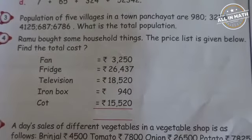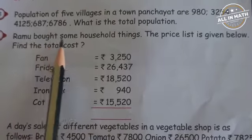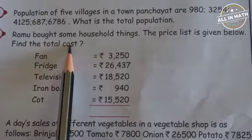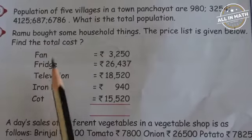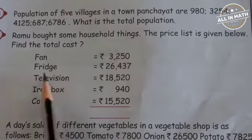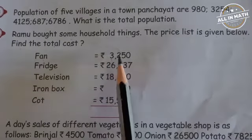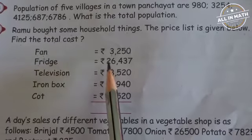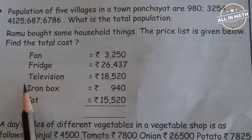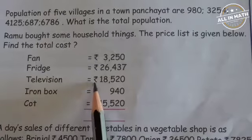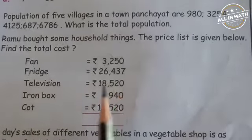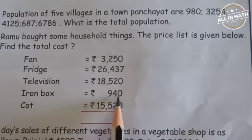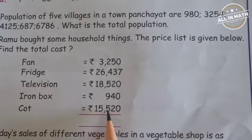Look at the fourth sum. Ram bought some household things and the price list is given below. Find the total cost. They are given the price list of some household things: Fan — Rs. 3,250; Fridge — Rs. 26,437; Television — Rs. 18,520; Iron box — Rs. 940; and Cot — Rs. 15,520.